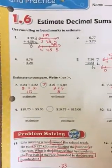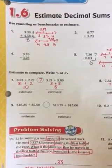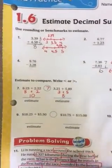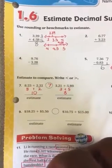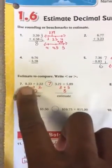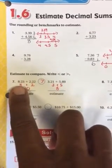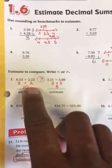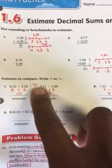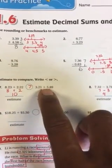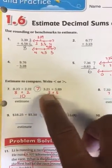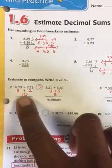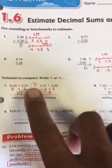Now let's compare. So during the comparing problems, we'll just use front end estimation. I'll use the front end of this is going to be 8. The front end of this is going to be 2. 8 plus 2 is 10. The front end of this is 3. The front end of this is 5. 3 plus 5 is 8. 10 is greater than 8. So Pac-Man would eat the 8.